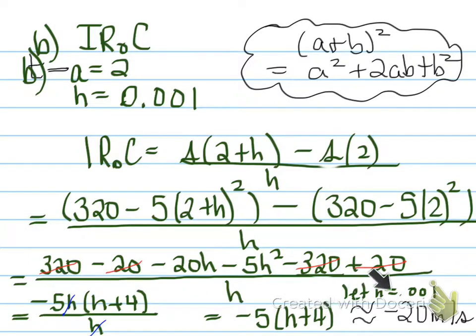Negative 5 times (h plus 4) is, now, we let h equal 0.001, and that gives us an approximate answer of negative 20 meters per second. So what we're looking at here is that the particular function, the velocity at 2 seconds is, therefore, the velocity at 2 seconds is 20 meters per second downwards. So therefore, the velocity at 2 seconds is 20 meters per second downwards.